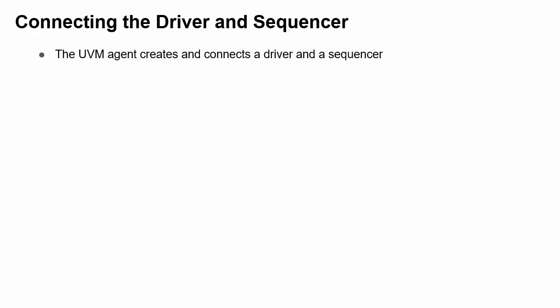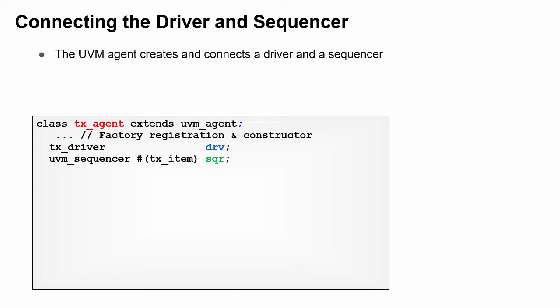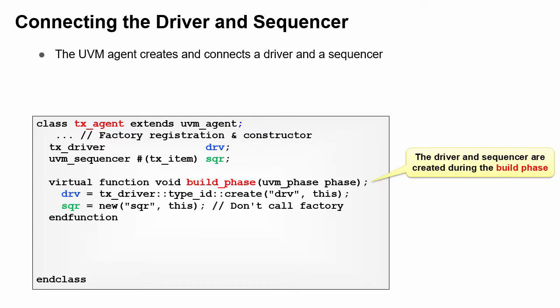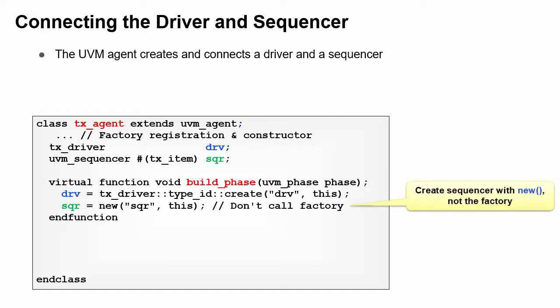The driver and sequencer are UVM components, part of the agent. An agent has a driver and has a sequencer. The TX agent class has handles for the driver and sequencer. During the build phase, components create lower level components. Here the driver is created and the sequencer is constructed. Since the UVM sequencer class is almost never extended, don't bother calling the factory to create it. Save yourself the overhead, even if just a small amount.